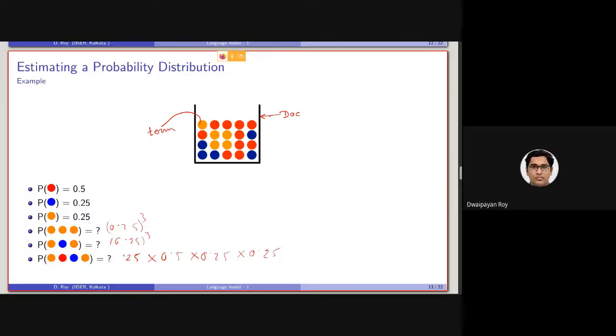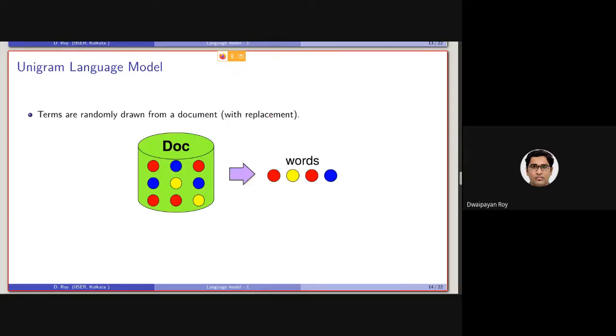Considering this, the first tool that we will be considering is called an unigram language model. In the unigram language model, the terms are basically randomly drawn from the document exactly like the way that we have discussed here with replacement. Let's say this is the document containing nine terms, basically three unique terms: red, blue, and yellow. What is the probability of generating this sequence from this document?